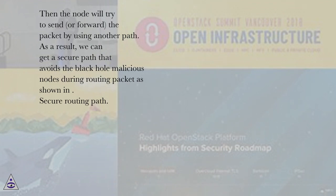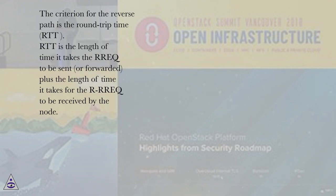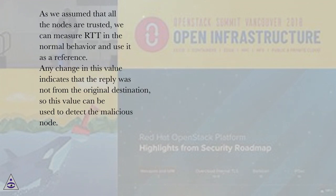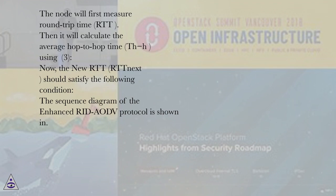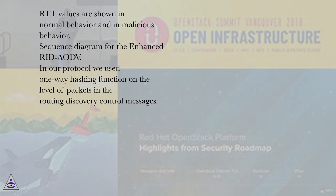Secure Routing Path. The criterion for the reverse path is the round-trip time, RTT. RTT is the length of time it takes for the request to be sent or forwarded, plus the length of time it takes for the reply to be received by the node. As we assume that all the nodes are trusted initially, we can measure RTT in normal behavior and use it as a reference. Any change in this value indicates that the reply was not from the original destination, so this value can be used to detect the malicious node. The node will first measure RTT, then calculate the average hop-to-hop time, TH-H, using equation 3. The new RTT (RTT_next) should satisfy the following condition. The sequence diagram of the Enhanced RID ODE protocol shows RTT values in normal behavior and in malicious behavior.